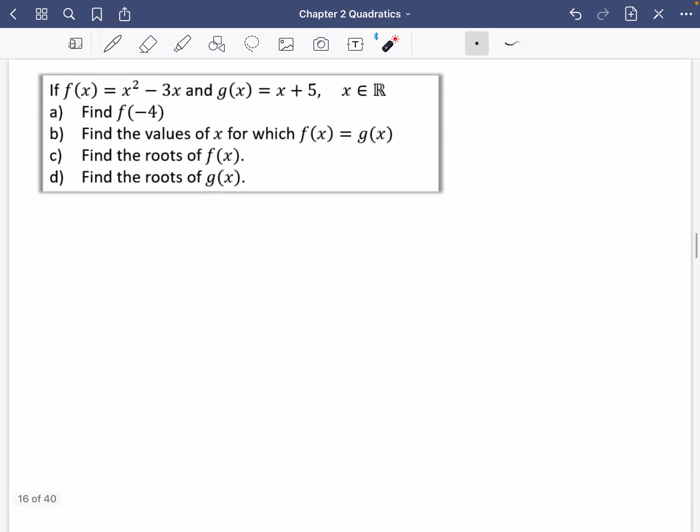Let's have a look at this applied with a particular example that uses some function language. We have two functions. We have f of x, which is x squared minus 3x. And we have a different function, g, which is just x plus 5. It's got this little information here that says the values getting put into here, x, are members of the real numbers. In other words, you can put any numbers into this function machine.